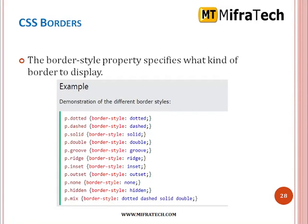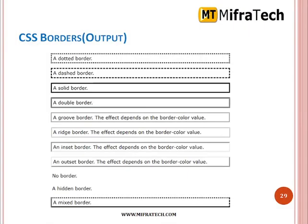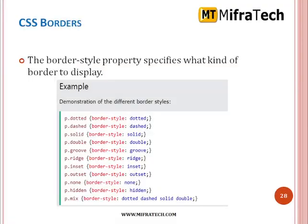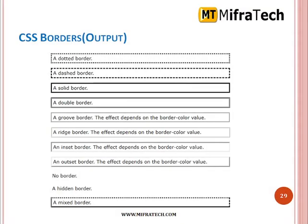CSS borders — there are several types of borders. The border style property specifies what kind of border to display: dotted, dashed, solid, double, groove, ridge, inset, outset, none, hidden. It is a shorthand property. Border output — dotted, dashed, a solid border, a double border, a groove border — the effect depends on the border color value. And a ridge border, an inset border, and a mixed border — dotted, dashed, and double borders are also shown.